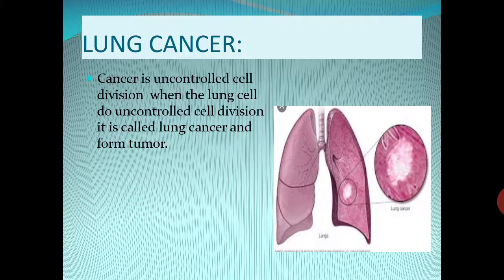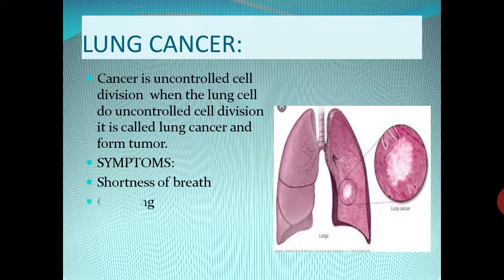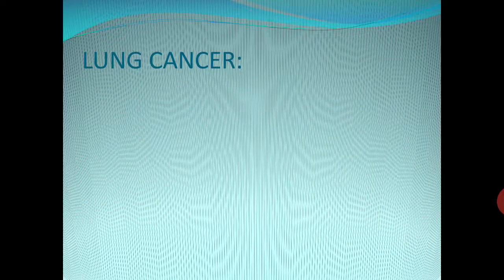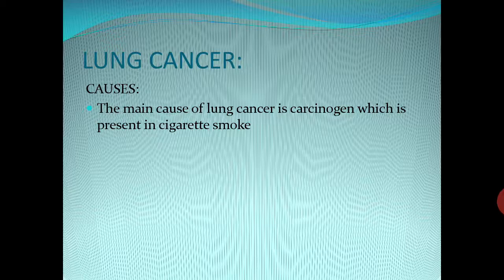Lung cancer is uncontrolled cell division. When lung cells undergo uncontrolled cell division, it is called lung cancer and a tumor is formed. Symptoms include shortness of breath, coughing, weight loss, and a new cough that does not go away.